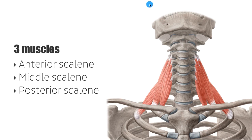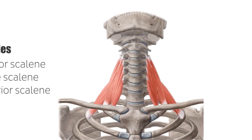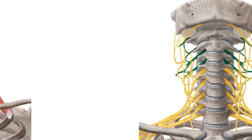Generally speaking, the scalene muscles, as you can see here on this image, they run from the vertebrae on the neck and then go all the way to the ribs. When they contract, they are able to lift the thorax. Let's start talking about these muscles.